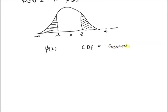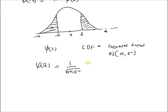By using the definition of the CDF of the standard normal PDF, that is Phi(z), we can also express the CDF of a general normal random variable given by N(μ, σ²). So let us denote the CDF of this general normal random variable as Psi(z), which equals 1 over square root of 2π σ² times the integral from minus infinity to z of e to the power of minus (v minus μ) squared divided by 2σ² dv. This is the CDF of a normal random variable with mean μ and variance σ².